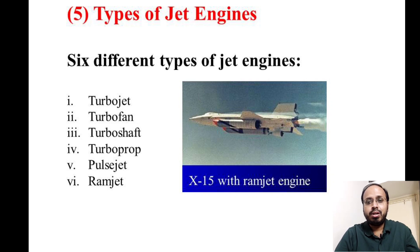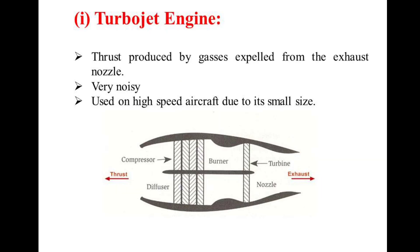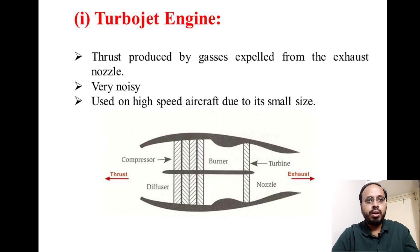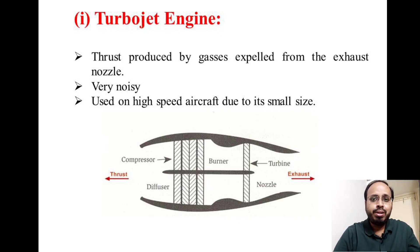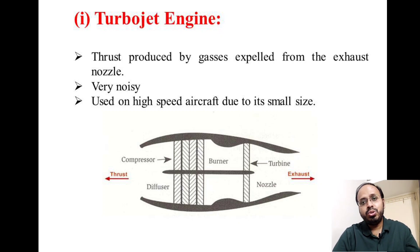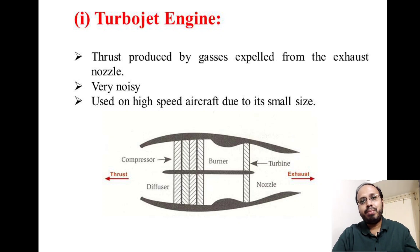The turbojet engine produces thrust by expanding gases at the exhaust nozzle, but it produces a relatively high noise level, making it a noisy aircraft. Due to its small size, it is generally used on high-speed aircraft and is best suited for military aircraft.